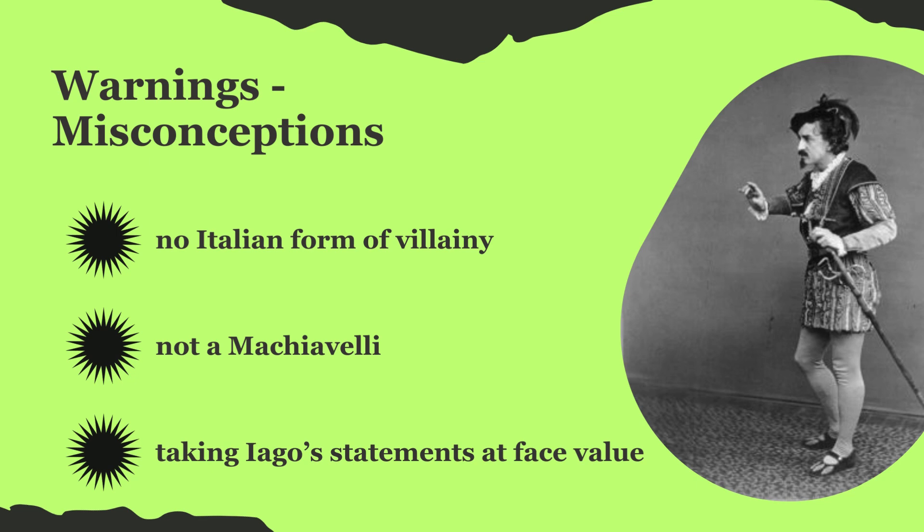Bradley highlights Iago's use of religious language and contrasts him with a character like Aaron in Titus Andronicus, who is more aligned with the stereotype of a Machiavellian villain. Bradley further warns against taking Iago's statements at face value, emphasizing the need to scrutinize his words and actions in the play to uncover the truth. He highlights a tendency among critics to mistakenly treat Iago's assertions as factual information provided by Shakespeare, leading to misinterpretations of the character's motives and actions.